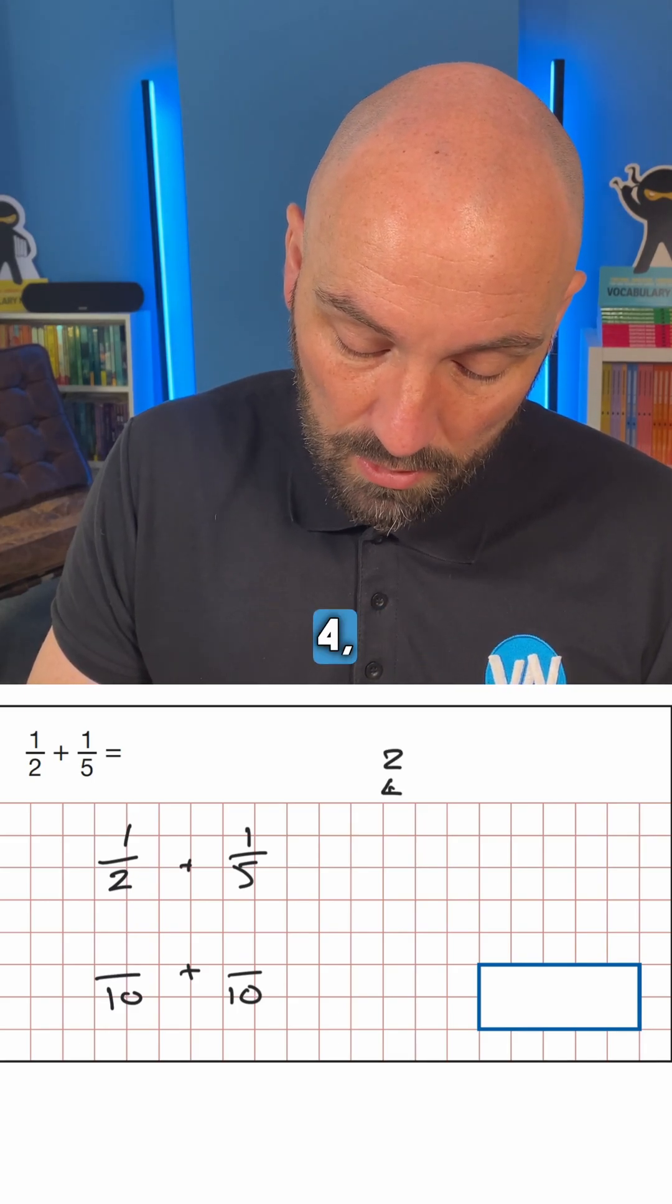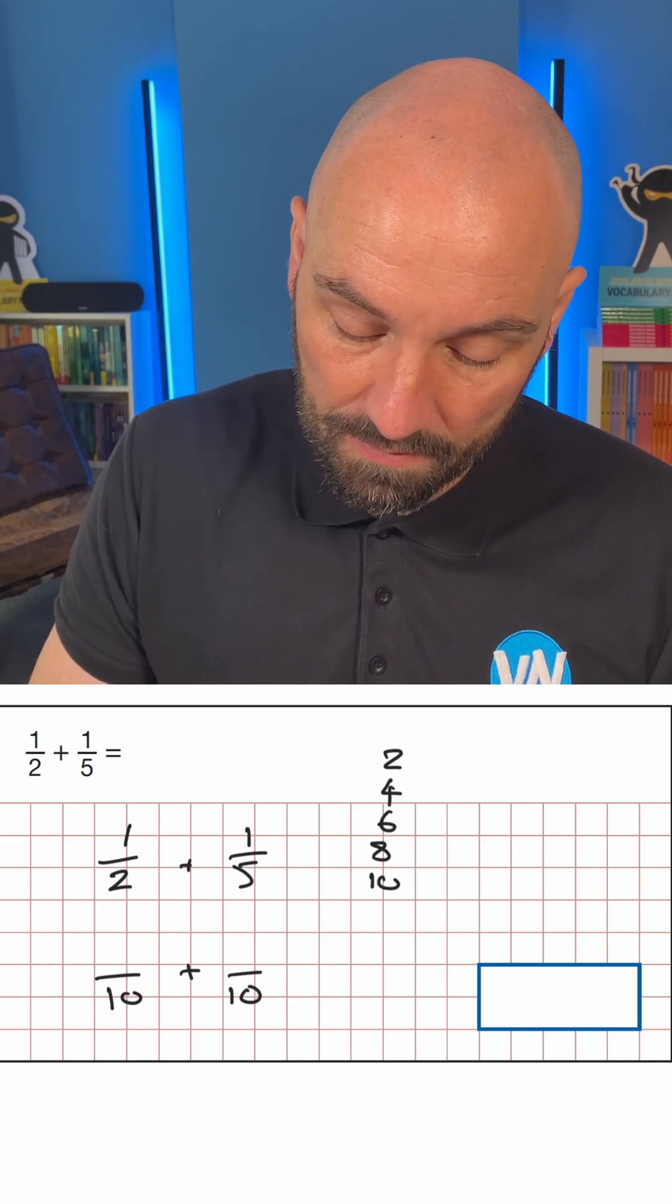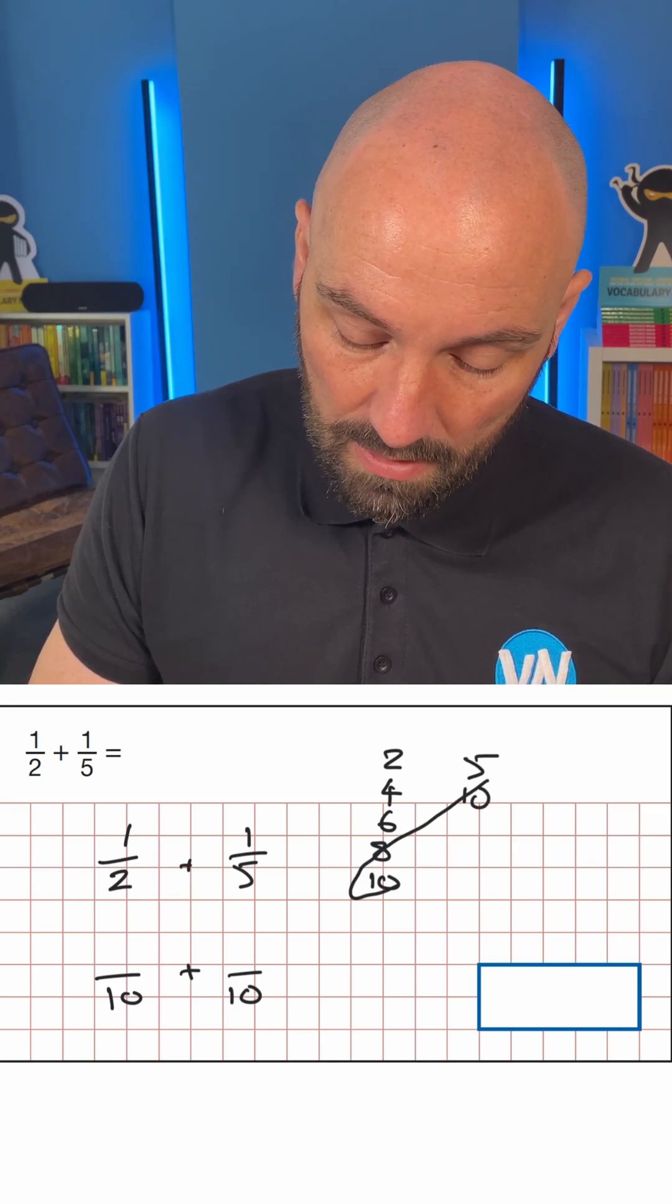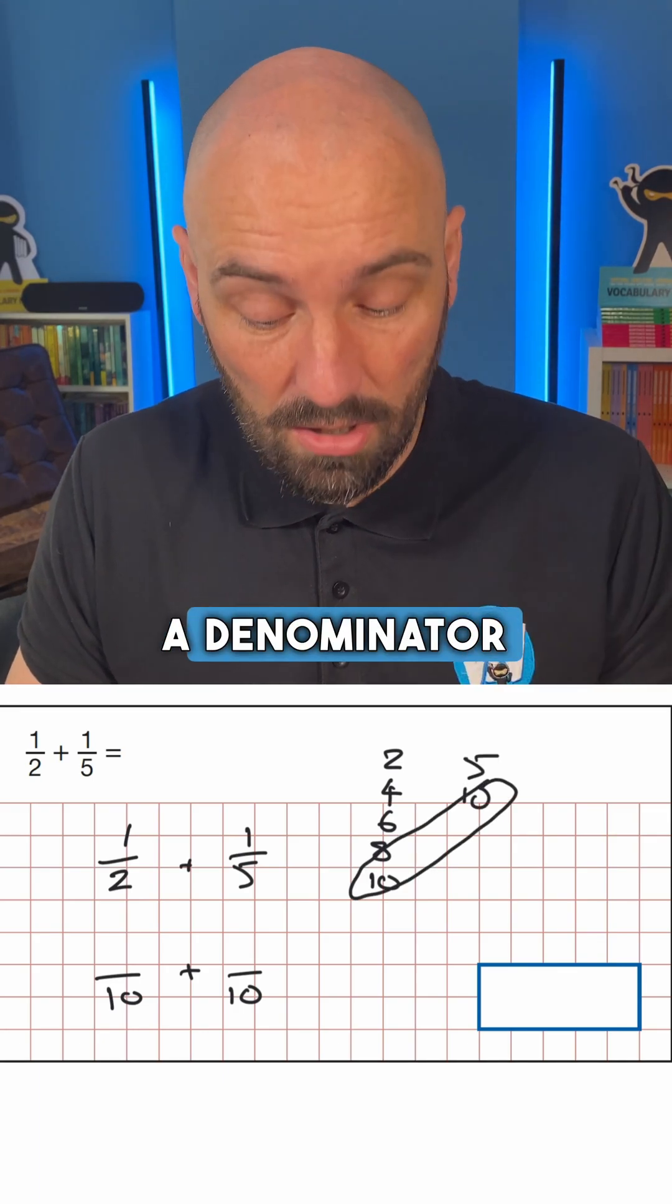If we went through the 2 times table, 2, 4, 6, 8, 10. 5 times table, 5, 10. That is a denominator that they share, a multiple that they share.